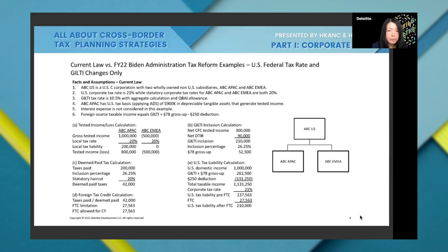Under the Biden proposal, the tax liability increases to $330,000. This is because first, the federal rate change means $1 million in U.S. domestic income at 28% requires $280,000 in tax. Additionally, because of the way GILTI is calculated under the proposal, there is a U.S. residual tax on GILTI. So the U.S. tax liability increases by more than 50%.